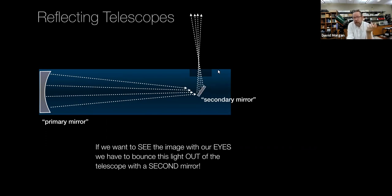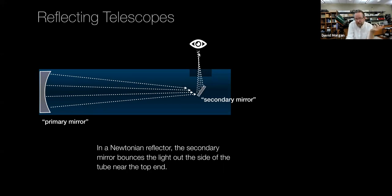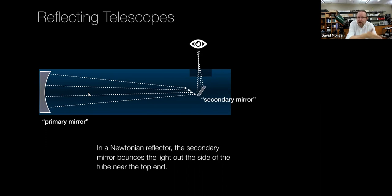The problem is you can't see that image because it's inside the tube — you need to get the light outside so you can magnify it with your eye or a camera. The way you do that is to put a second mirror inside the tube that bounces the light out the side of the tube, where you put your eyepiece. A Newtonian reflector has a primary curved mirror that focuses the light, and then a secondary mirror that bounces the light to the side so you can put an eyepiece on the side of the telescope. The secondary mirror does block a little bit of the light getting to the primary mirror, but that's just a design factor you have to deal with.